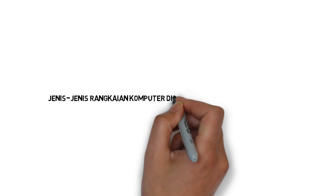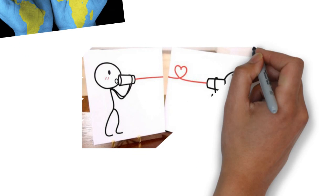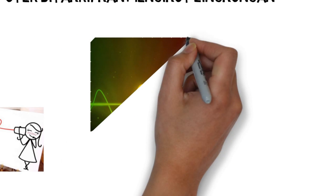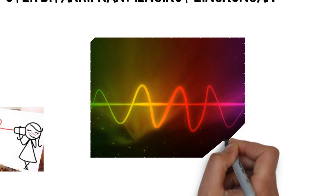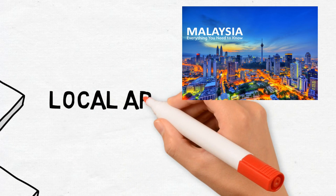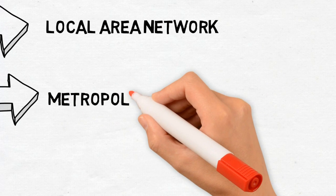Sebelum itu, jenis-jenis rangkaian komputer ditakrifkan mengikut lingkungan geografi. Selain daripada itu, perbezaan di antara rangkaian tersebut turut melibatkan jarak dan orientasi. Biasanya ia berorientasikan ke rangka pusat dan menggunakan talian telefon atau bergantung kepada gelombang mikro untuk menghantar data. Untuk pengetahuan semua, di Malaysia terdapat tiga rangkaian komputer iaitu LAN, MAN dan WAN.